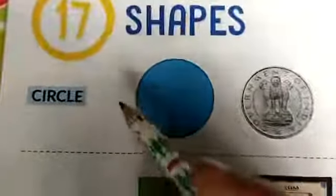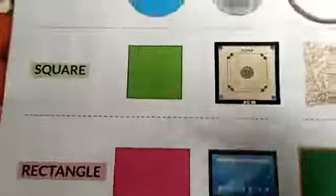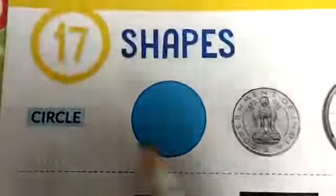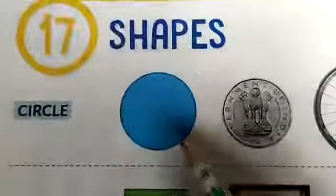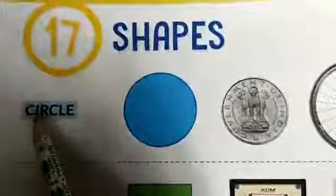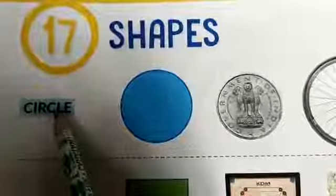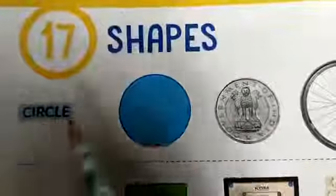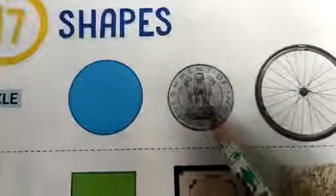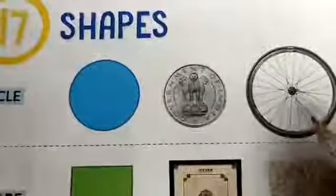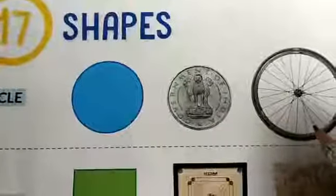Look here students, some shapes are given with examples. So let's start circle. First shape is circle. C-I-R-C-L-E circle. Example: coin, wheel. Coin and wheel are in the shape of a circle.